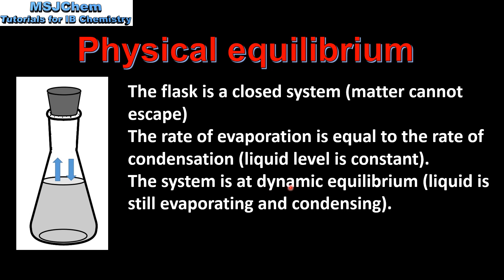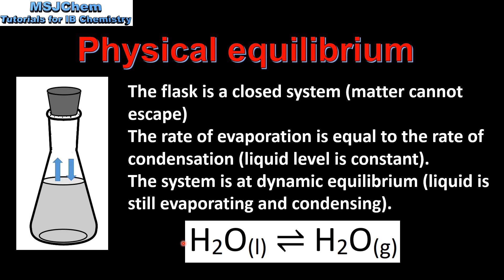It's dynamic because the liquid is still evaporating and the gas is condensing. We can write an equation to represent what's happening in the flask. H₂O as a liquid is becoming H₂O as a gas — that's evaporation — and also H₂O as a gas is condensing to form H₂O as a liquid. This two-way arrow is used to show dynamic equilibrium.